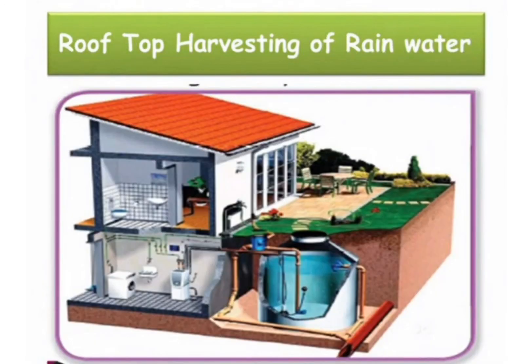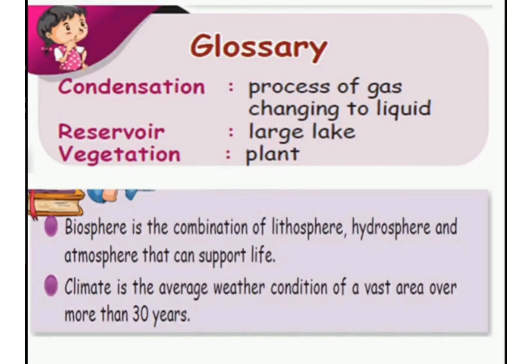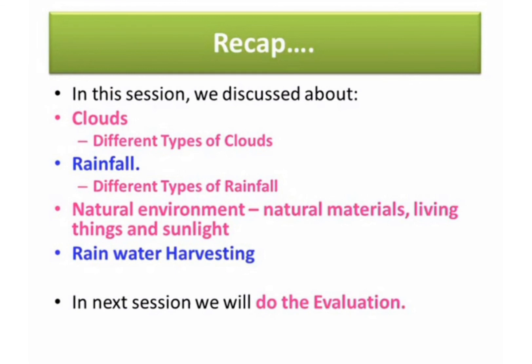The picture shows rooftop harvesting of rainwater — the water is collected and reused in toilets, gardens and other utilities. Now we will see the glossary: condensation — process of gas changing to liquid; reservoir — large lake; vegetation — plant. In this session, we discussed about clouds and the different types of clouds — cirrus, stratus, cumulus and nimbus. The types of rainfall: convectional rainfall, orographic rainfall and cyclonic rainfall. And also rainwater harvesting.